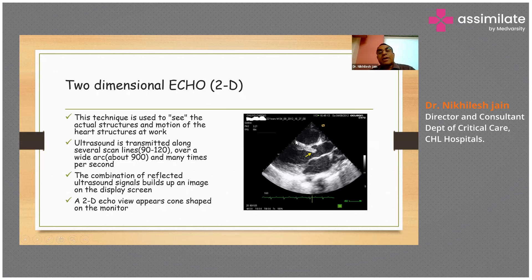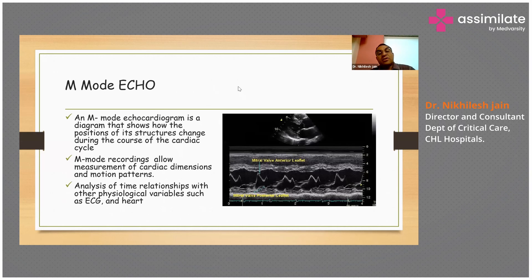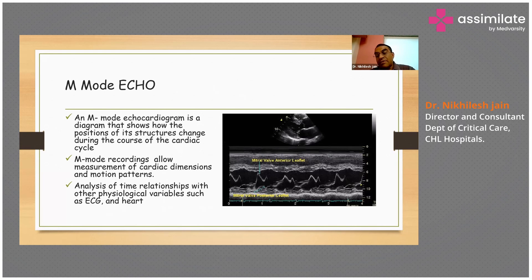M mode echocardiogram is a diagram which shows how the position of heart structures changes during the course of the cardiac cycle. M mode recordings allow the measurement of cardiac dimensions and motion patterns. You can actually analyse the time relationships with other physiological variables and time them with the ECG and the heart cycle accordingly.